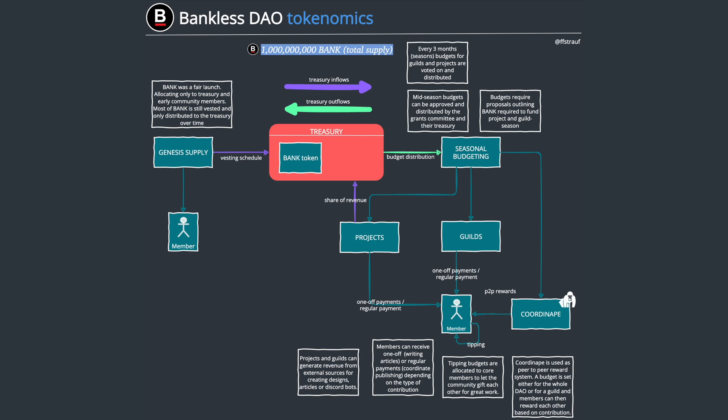On top of that, members can receive additional BANK through a tipping system, which I really like — it's more of a bottom-up payment mechanism. Because Bankless DAO is decentralized, the peers you work with know best the quality of your work. They can tip you with BANK right in Discord, and that tipping budget is allocated to guilds, who then distribute it to other members.